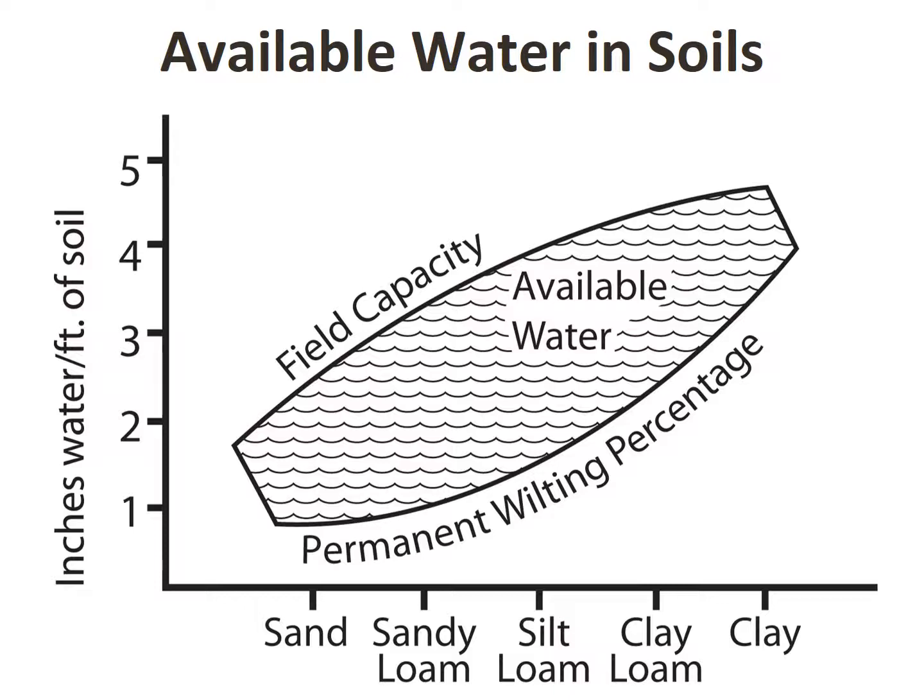This is a good example, specifically when we're looking at the water that's available to plant roots. If we look at the extreme ends and start with the sand, you can see that there's a very low amount of water that's held within sand. That's because sand produces very large pores, so the water essentially just drains right through. We're only looking at about two inches of water per foot of soil.